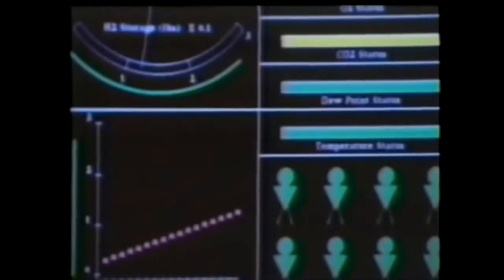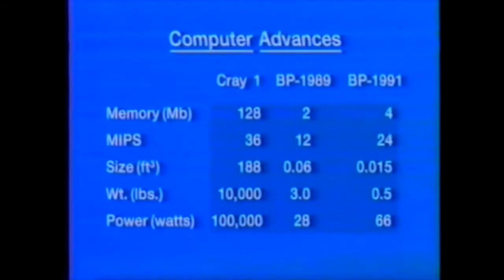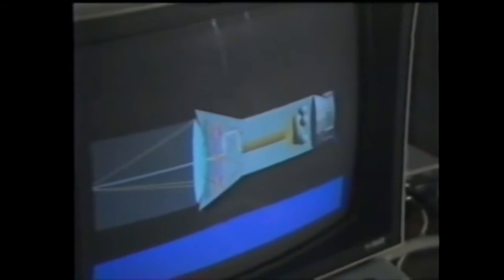SDI computing capability has grown and shrunk at the same time. SDI needs supercomputer-style capacity in space but can't spare the room, weight, or power. While space-based computers don't need the memory, they do need the speed. Comparing a BP flight computer with a Cray-1, the BP has one-third the MIPS — millions of instructions per second — but it weighs three pounds compared to 10,000, and uses only 28 watts of power compared to 100,000 watts for the Cray-1. SDI is working on diamond-based computer chips compared to current silicon-based chips. Diamond chips can take operating temperatures of 500 degrees Celsius compared to 100 degrees Celsius failure temperatures for silicon chips, meaning future SDI computers can be totally solid with no need for space to cool chips.